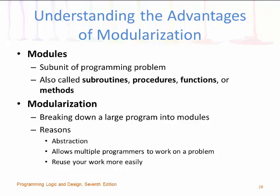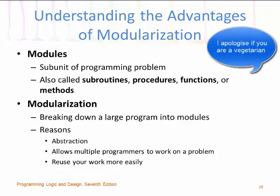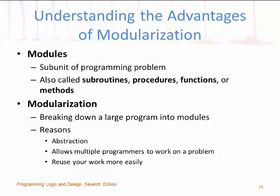Modulization is the process of breaking down a large problem into modules, and computer scientists also call it functional decomposition. Why do we do this? The main reason is that you can't eat an entire cow — you have to break the cow up into sections and eat it bit by bit. That analogy describes basically what modulization is. The reasons given include abstraction, which we'll discuss in the next slide.